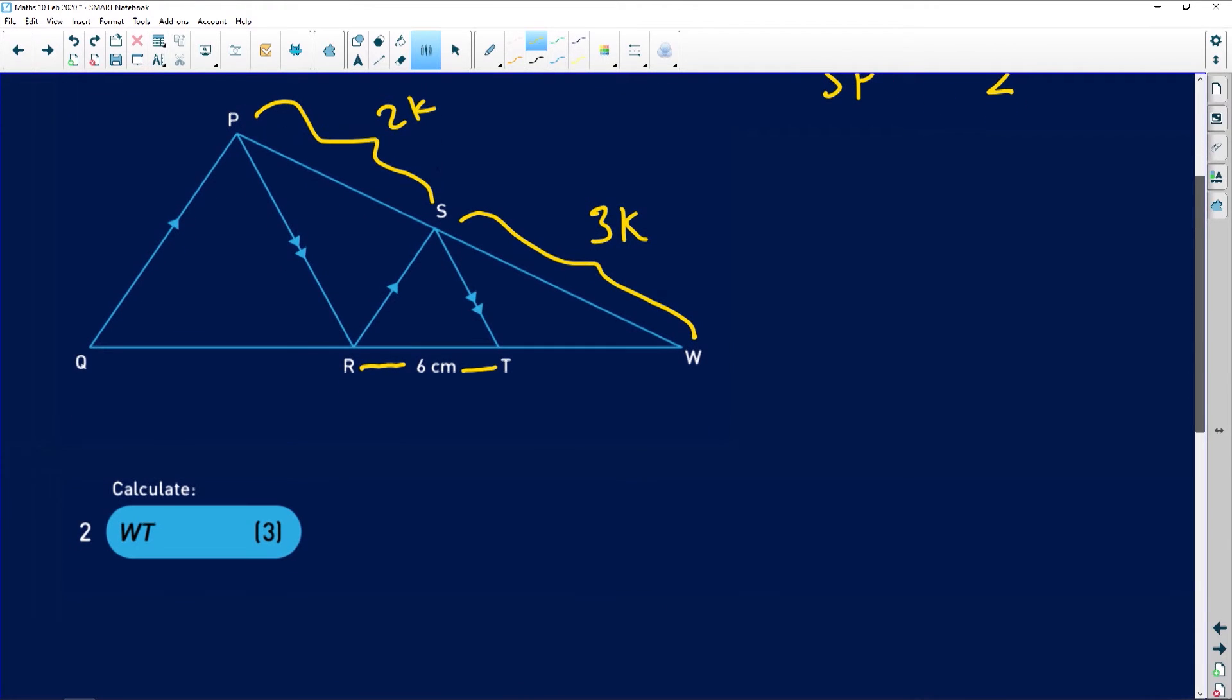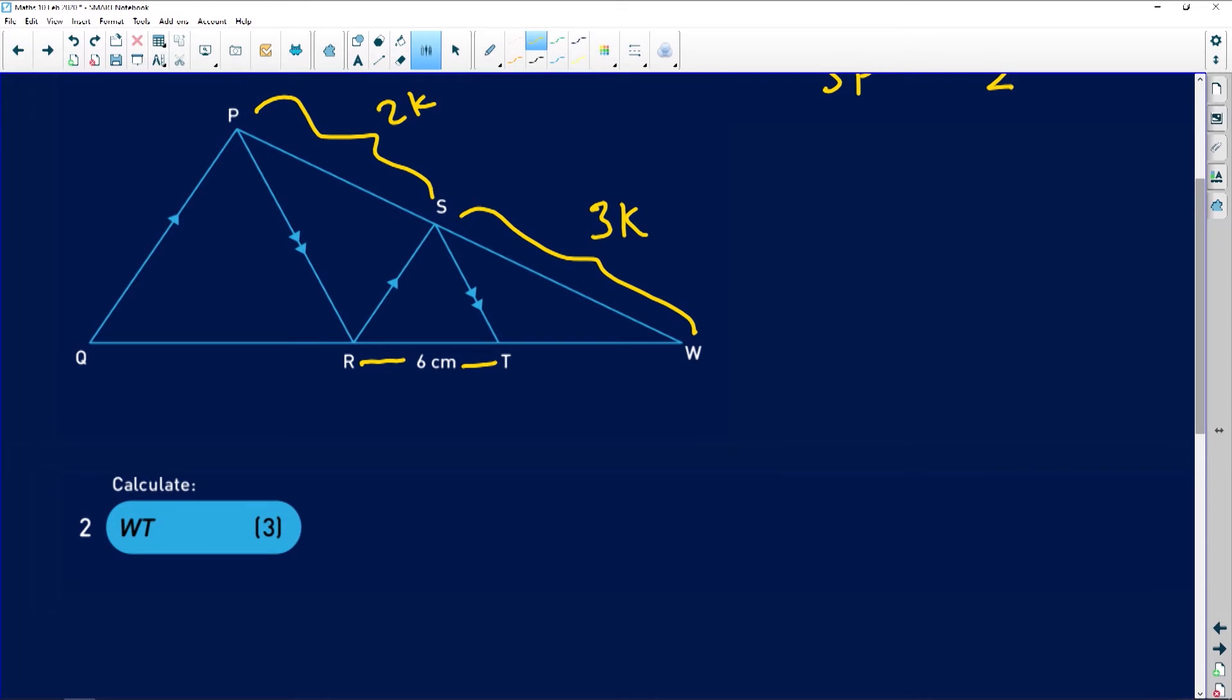The first question says we need to calculate WT. Where is WT? WT is this small piece that you're looking at here. So we know for a fact that WT divided by TR should be equal to WS divided by SP. Where does this come from? This comes from the proportionality theorem. I'm going to say prop theory, why? Because the line ST is parallel to the line PR.